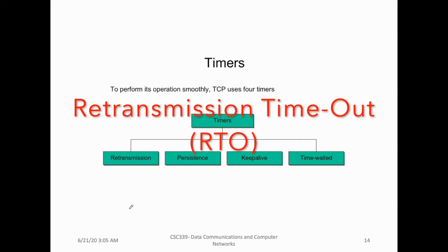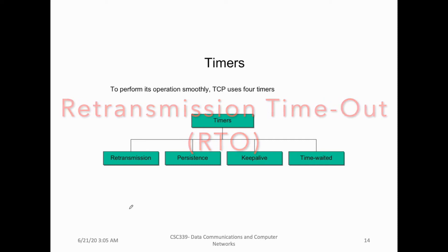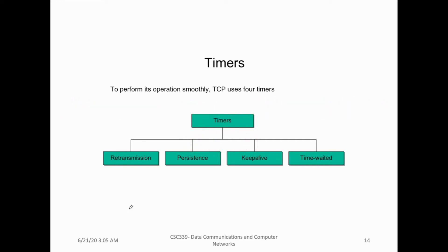TCP uses four timers to handle its operations. The first timer is called retransmission, then persistence, then we have keep-alive, and then we have time-wait.